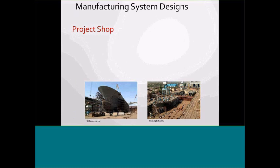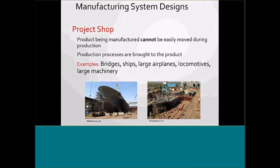When you look at manufacturing systems design, you've got the project shop: bridges, ships, large airplanes, locomotives, large machinery — products that cannot be easily moved during production. You can look at shipbuilding, for example: you can progressively see how they're building the ship and how production processes are brought into the product. There's a lot of heavy fabrication there.